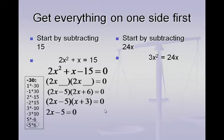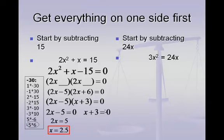Now we take each factor, set it equal to 0, and solve for x. On the first factor, we begin by adding 5 to the right, and then divide by 2. x equals 2.5, or as a fraction, 5 over 2. On the second factor, we subtract 3, and we get x equals negative 3. So the two answers to this problem are 2.5 and negative 3.